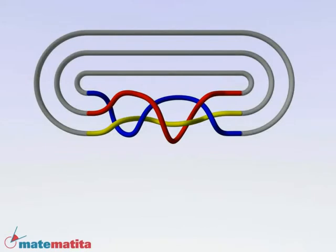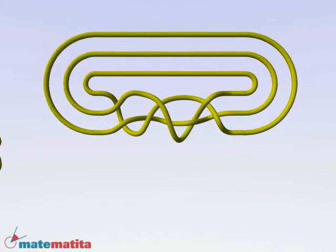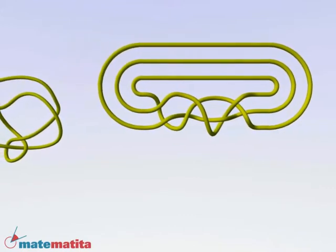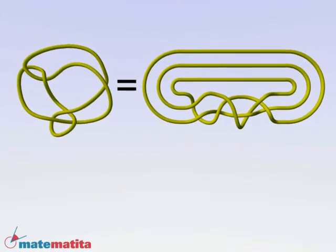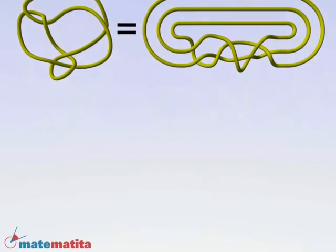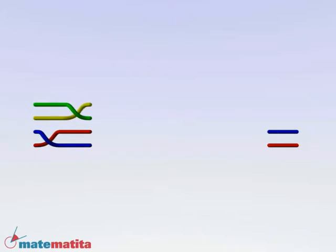When we close it, we get a knot equivalent to the original one. That is, we can deform one into the other without cutting the string. Why make life so difficult? The knot on the left seems simpler. But in this way, we can exploit the group structure that we know on braids.